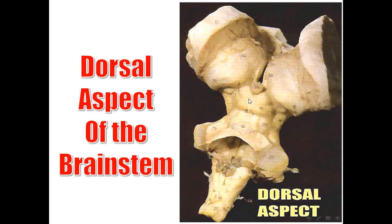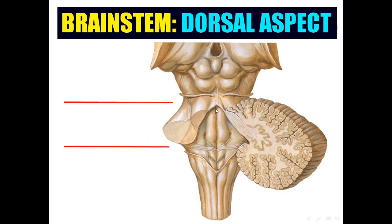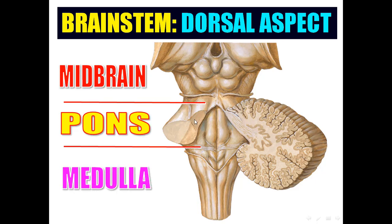Now we talk about the back of the brain stem — back of the medulla, back of the pons, and back of the midbrain — and this cavity is the fourth ventricle. Starting with the midbrain: four colliculi — two superior colliculi, two inferior colliculi — and the trochlear nerve. The midbrain's dorsal surface is the tectum.